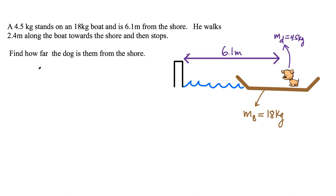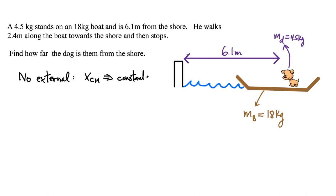These problems are all kind of the same, whether it's a dog or a person walking on a boat. The key is that there are no external forces in this problem, and if that's the case, the position of the center of mass is going to be constant. That means there is no change in the position of the center of mass of the system — the boat and dog combination — from before to after.